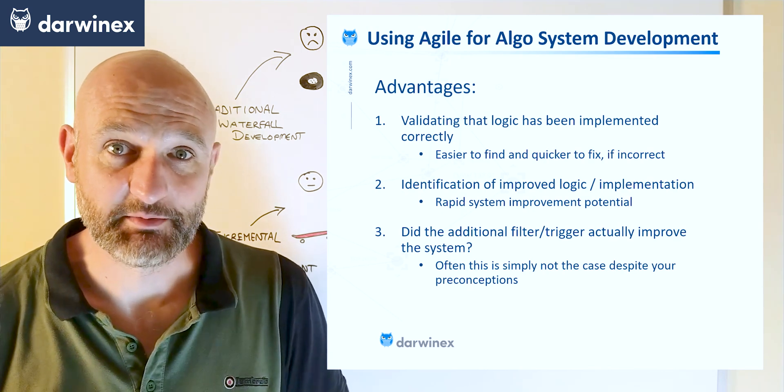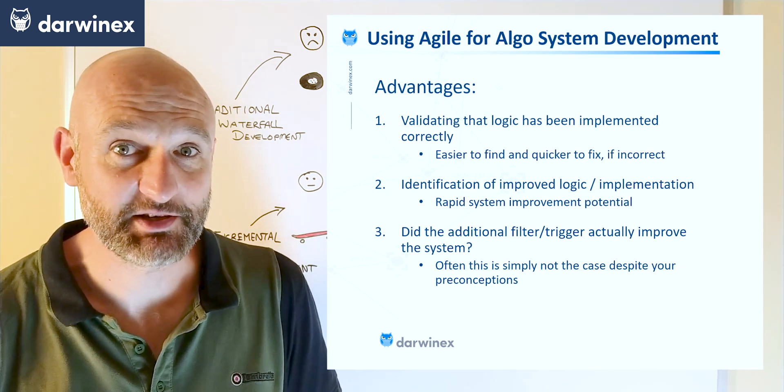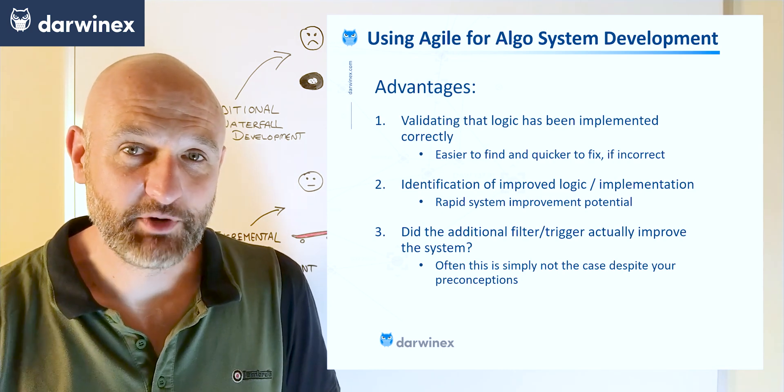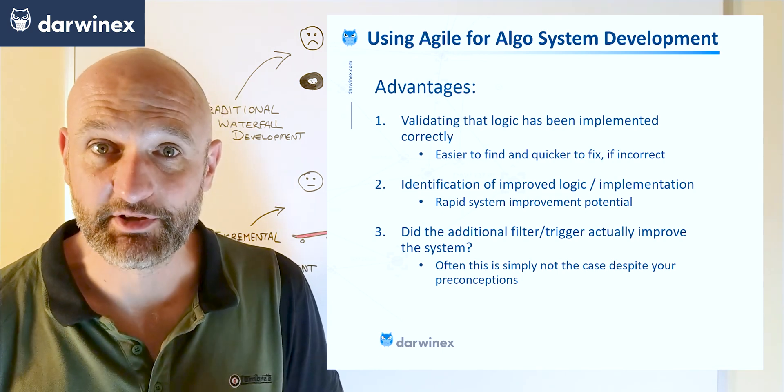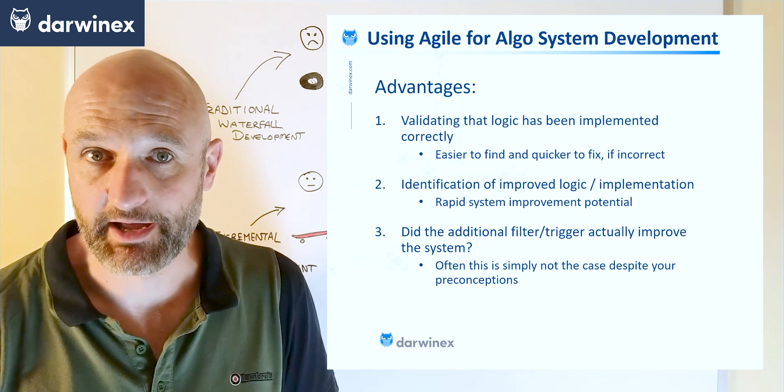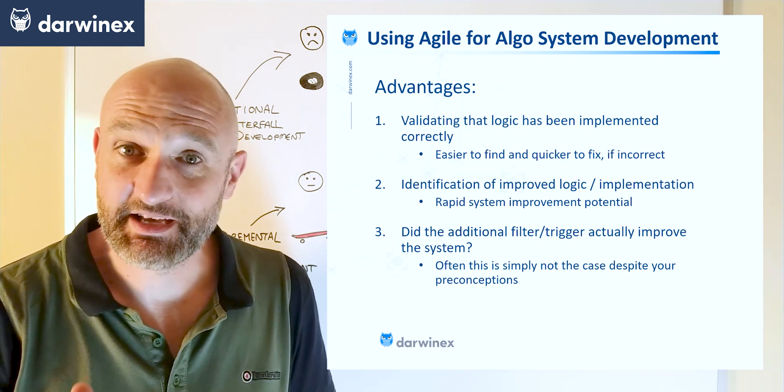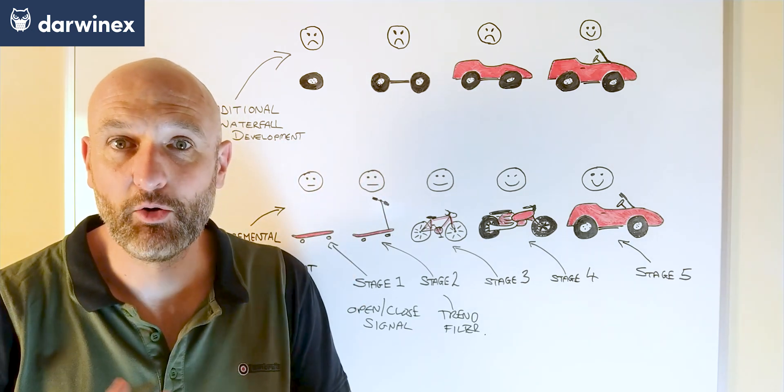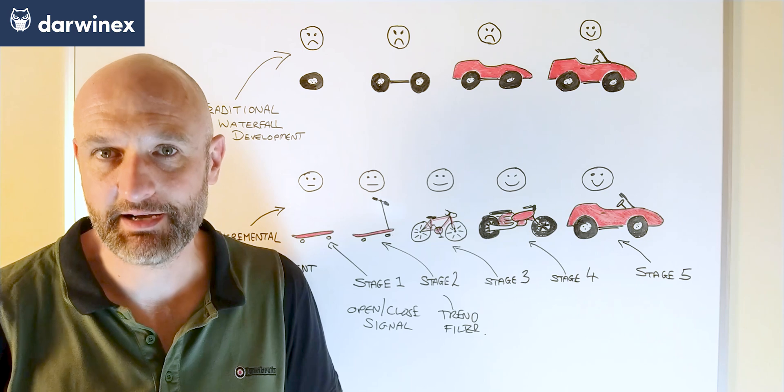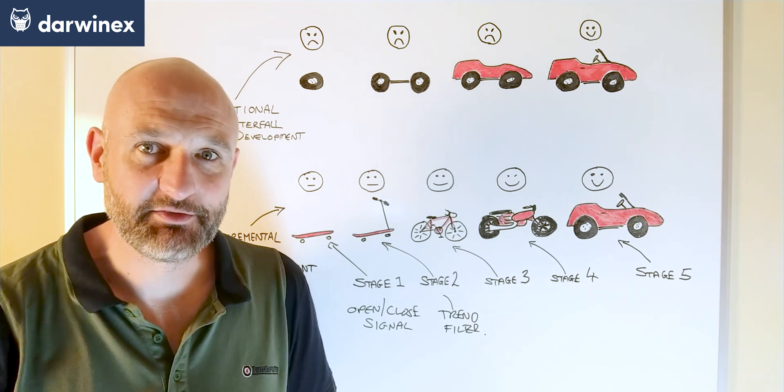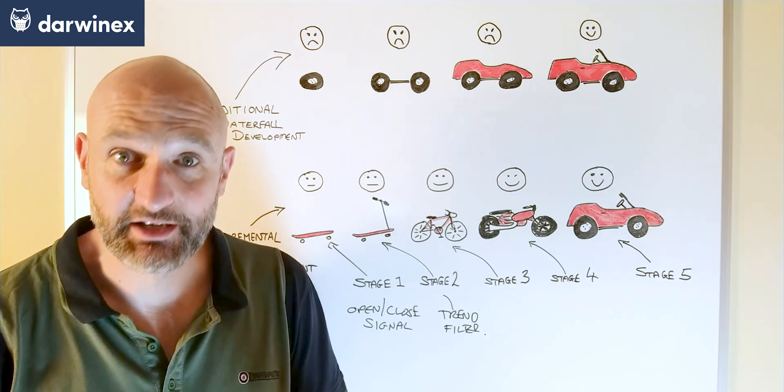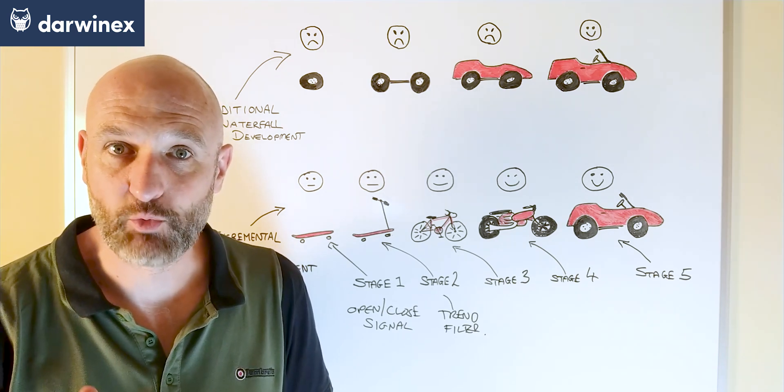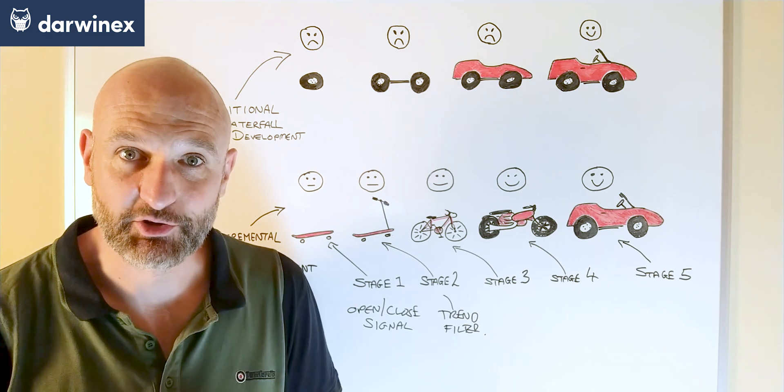Now, removing a component from your system is sometimes a difficult thing to do, especially when you've put a lot of thought and effort into it. But if it doesn't improve the results, then you need to accept that it either needs changing or throwing away. But hopefully you can see again here that if we'd taken the top approach where we developed the whole algo system before we back tested it, you might have thought that it was this strategy as a whole that wasn't working, when in actual fact it was just a problem with one component, for example, the trend filter.